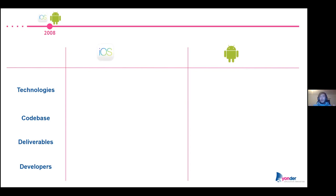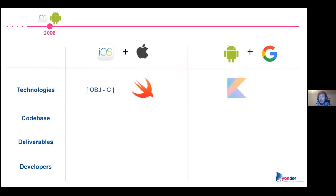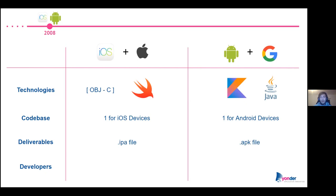For the native ones — iOS and Android — they are backed up by big companies: Apple and Google respectively. As technologies, you will have Objective-C and Swift for the iOS ecosystem, and Kotlin with Java for Android. The code base requires one for iOS devices and one for Android. Therefore, you'll have some native files as deliverables, and in order to have an application working on both native platforms, you will need two professionals, one for each platform.